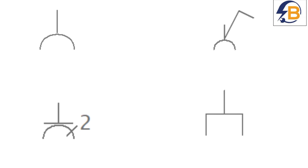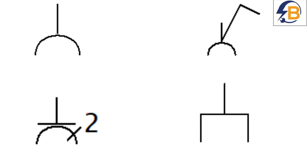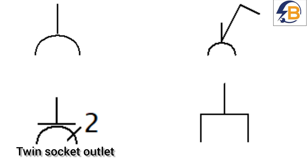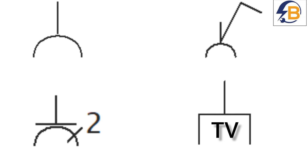The next set of symbols are sockets. We have different ways to represent them in a wiring diagram. There are socket outlets without a switch — this symbol is used to represent a socket outlet without a switch. Then this is the symbol for a switched socket outlet, or socket outlet that has a switch. This is used to represent a double socket. Apart from normal electrical circuits, we also have socket outlets for television, for data, and for telecommunications. This symbol can be used to represent a television socket.